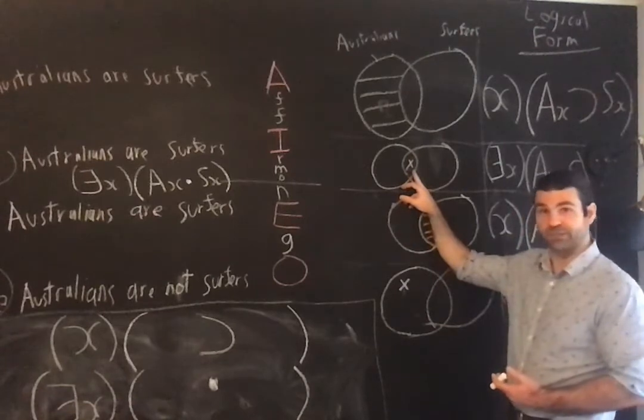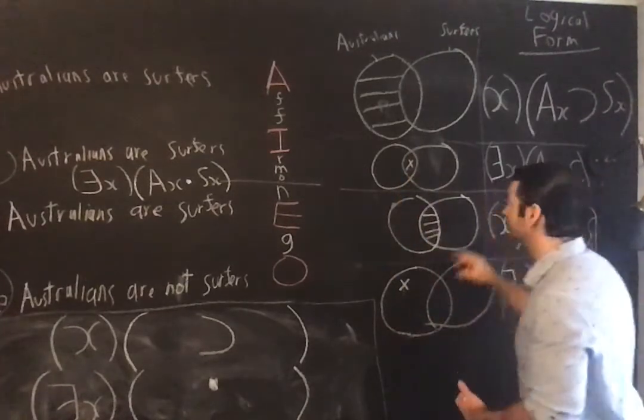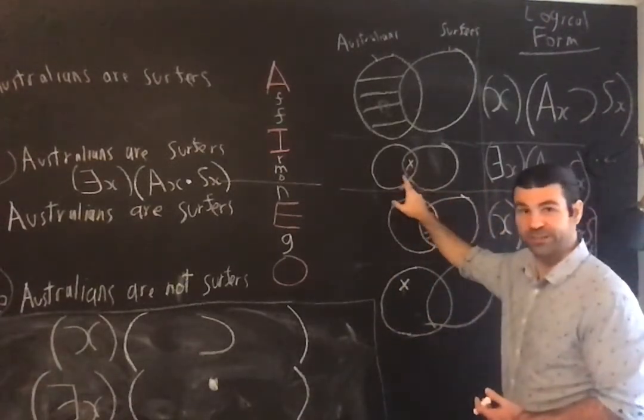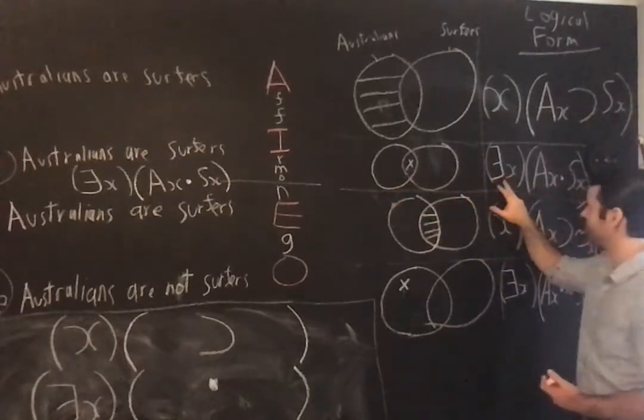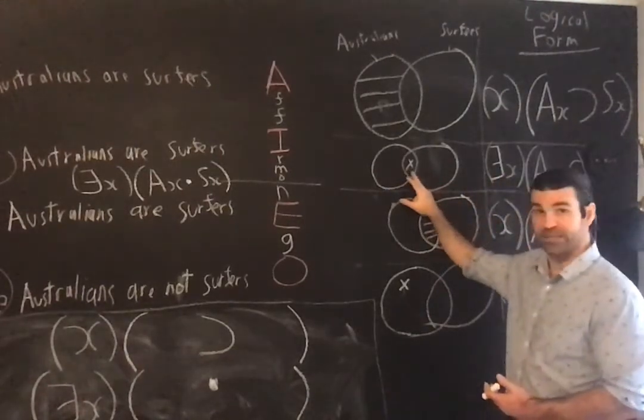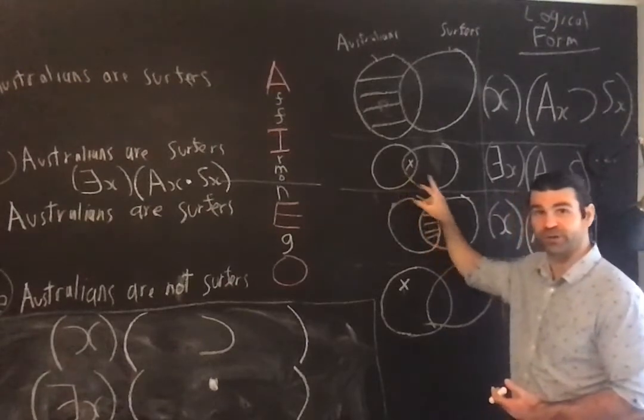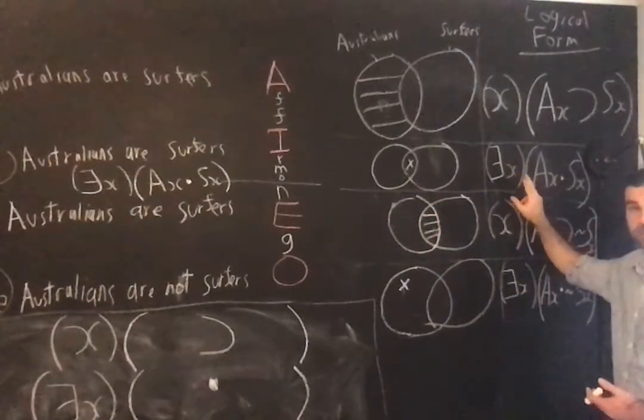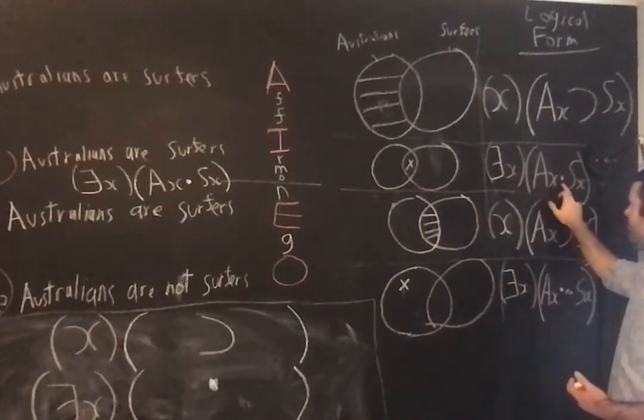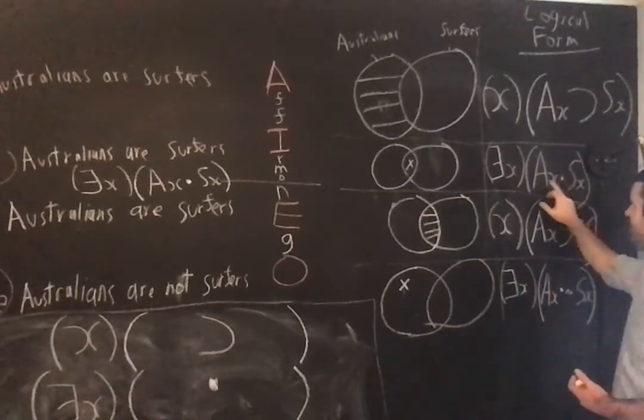The logical form of this is: there is at least one, so that's going to get the existential quantifier, and I'm saying that it is both Australian and a surfer. The logical form is there exists X such that both X is Australian and X is a surfer.